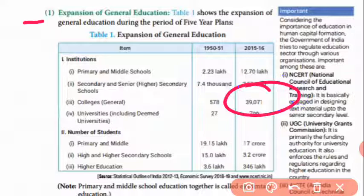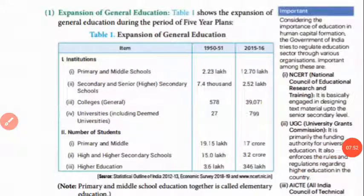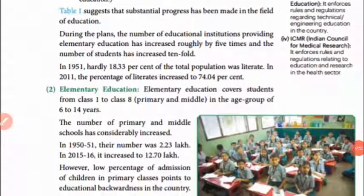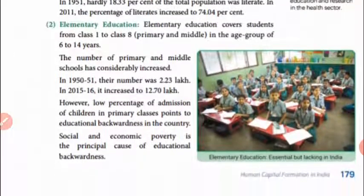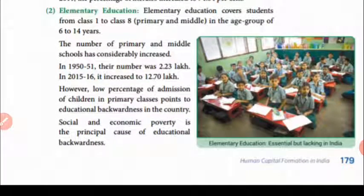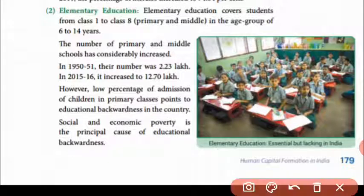Considering the importance of education for human capital formation, the Government of India tries to regulate the education sector through various bodies. Indian school education is managed through NCERT. For higher studies, the UGC — University Grants Commission — is participating. Substantial progress has been made in education during the plan periods; the number of educational institutes providing elementary education has increased roughly by 5 times. For medical research, ICMR is the relevant organization.